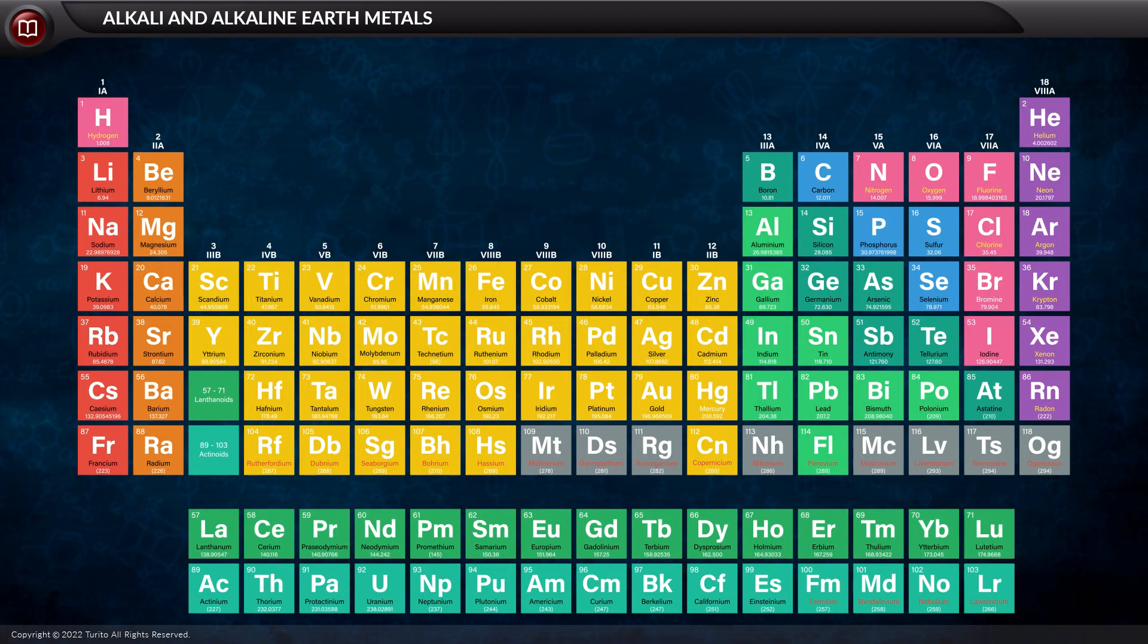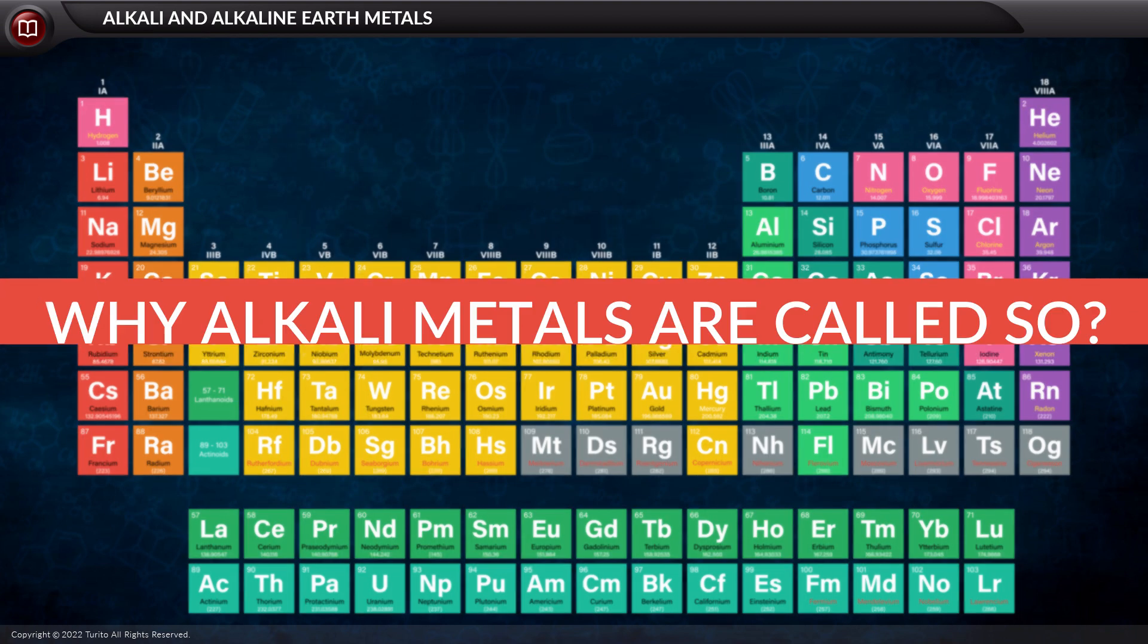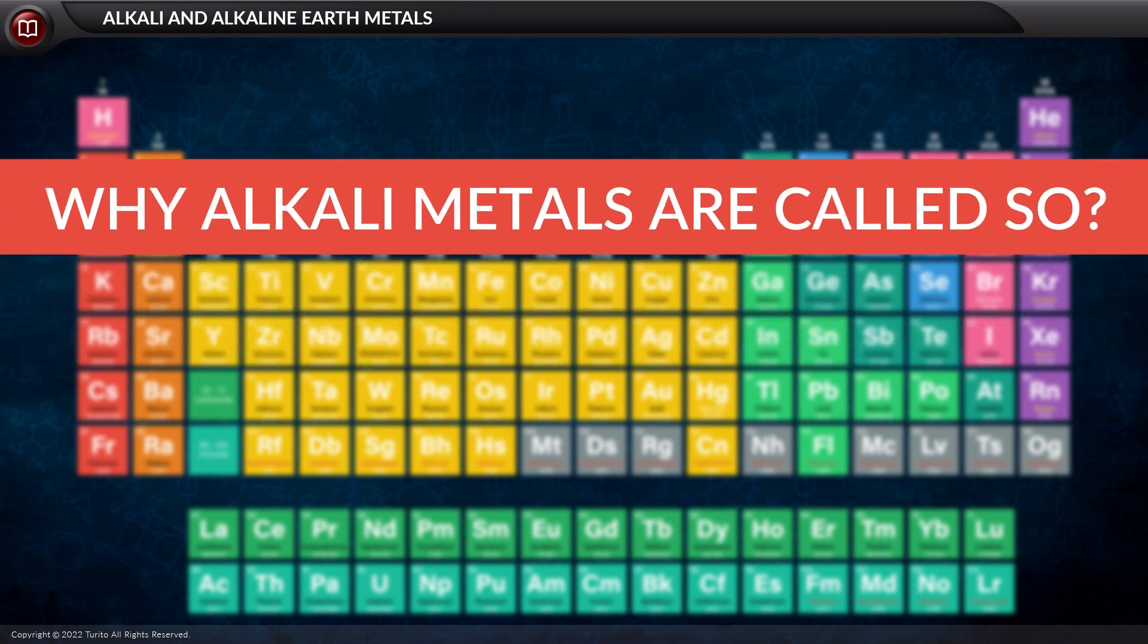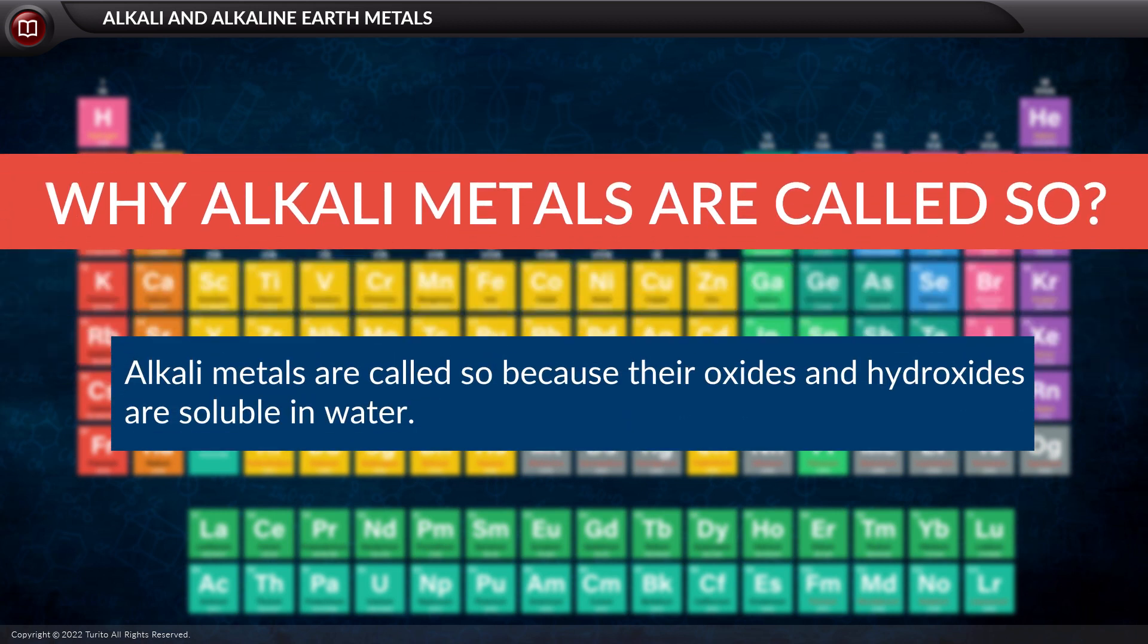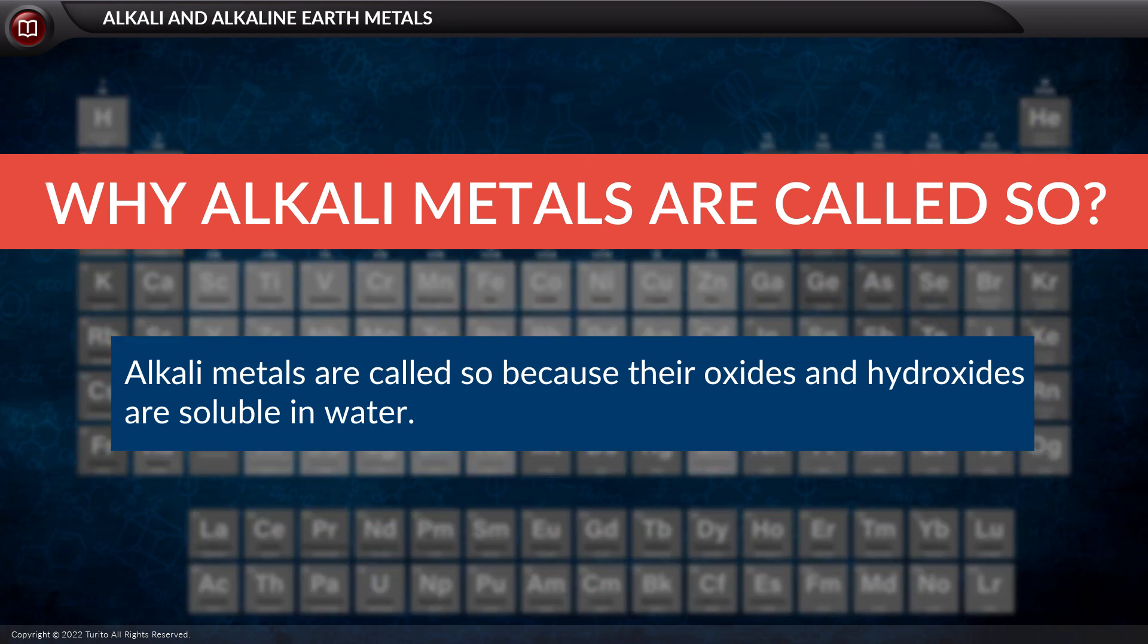Before we go to the alkaline earth metals, let us know why alkaline metals are called so. Alkaline metals are called so because their oxides and hydroxides are soluble in water to form basic solutions.